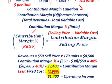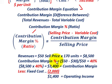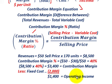Subtracting the fixed cost of $2,000 from the contribution margin of $3,400 gives operating income of $1,400. The contribution margin percentage can be used to determine operating income: contribution margin minus fixed costs equals operating income.